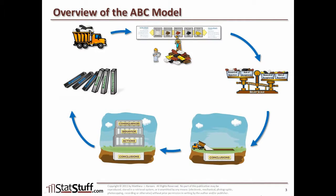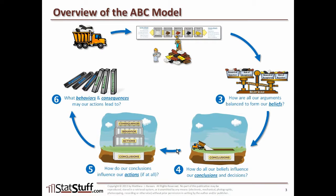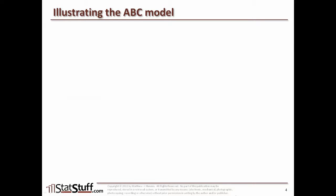It can be somewhat difficult to explain the various aspects of the ABC model, so we'll show an overview of the entire model and describe it by working backwards. To help explain the ABC model, I'm going to use the example of constructing a building. We'll start by understanding the behaviors and consequences, then work backwards through the six different stages, and wrap it all up together in the end.